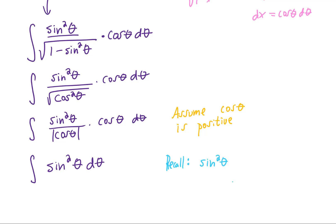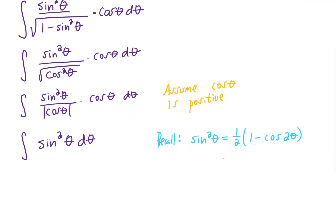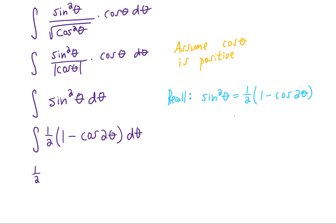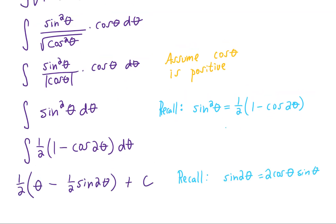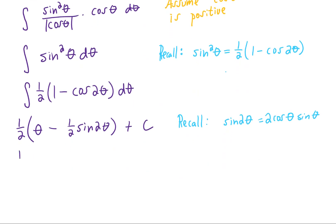Sine squared theta isn't directly integrable in that form, but we can use a rewritten version of the double angle identity: sine squared theta equals one half minus one half cosine of two theta. Put this on your list of things to remember — there's a similar identity for cosine squared theta, and we'll use these frequently when integrating sine squared or cosine squared. Pulling the one half out and integrating with respect to theta, I'm also going to rewrite one half sine of two theta as simply cosine theta times sine theta.